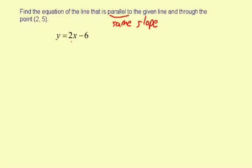So you know the slope has to be 2, and we have a given point, so we're going to use the point-slope formula.